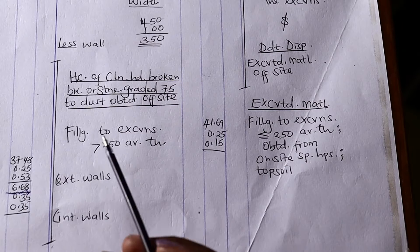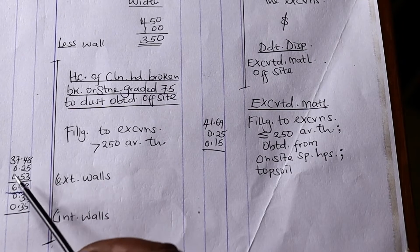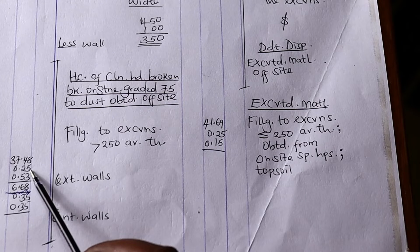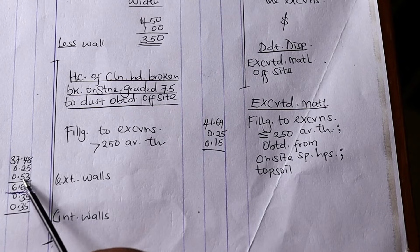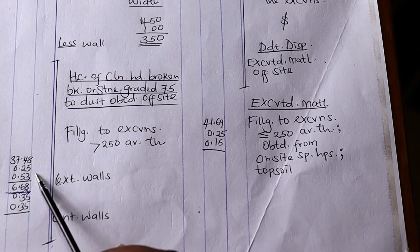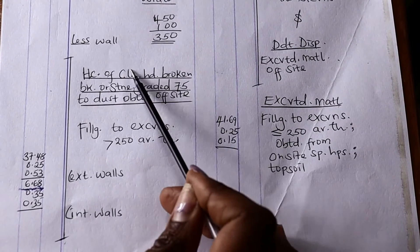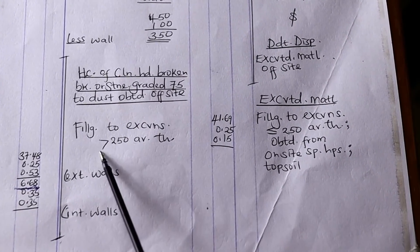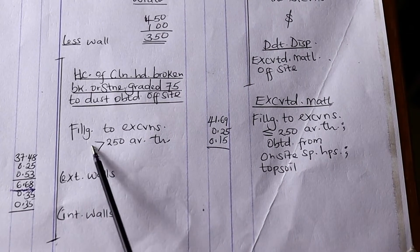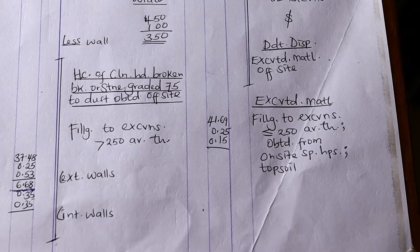The volume of the hardcore is calculated by taking the center line of the hardcore in the external wall, which is 37.45, multiplied by the width of the hardcore spread on the inside, which is 0.25, then multiplied by the depth of 0.53, as calculated above. For the internal walls, we take the length of that wall multiplied by the width of the hardcore then the depth. The specification is: hardcore filling to excavation, average thickness greater than 250mm.